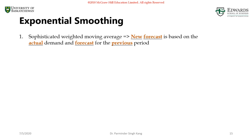There are different variants of exponential smoothing: single exponential smoothing, double exponential smoothing, and triple exponential smoothing. In this course, we are only focusing on single exponential smoothing, which means the method can only work effectively with a time series that is stationary — without trend, without seasonality — representing only random variation. For trend and seasonality, we would use double or triple exponential smoothing, but we will only stick to single exponential smoothing.